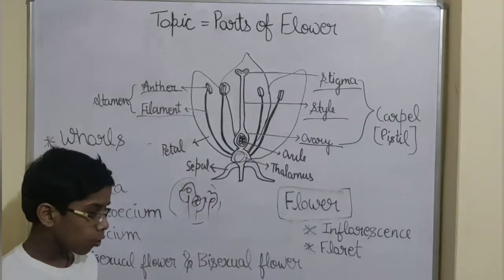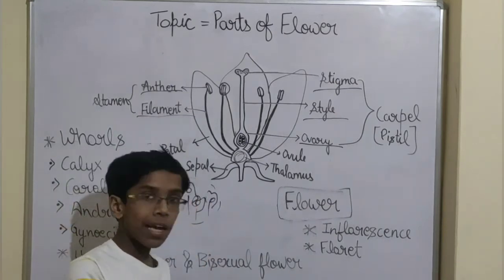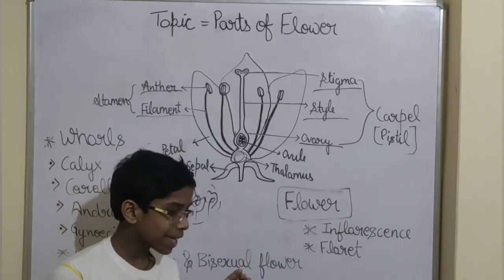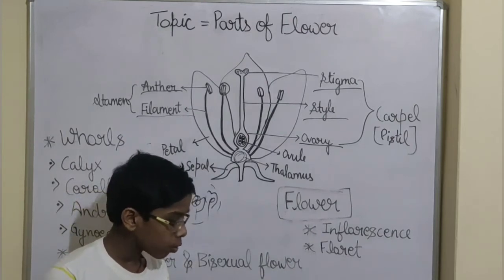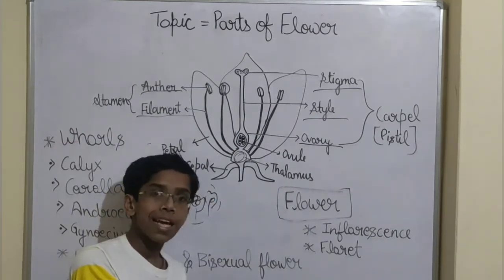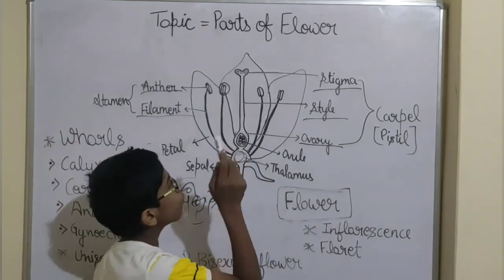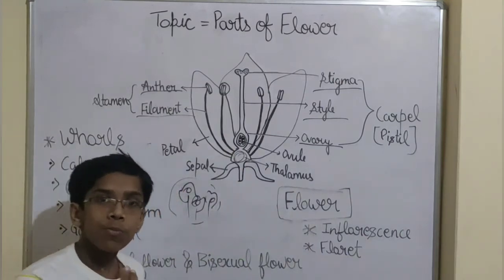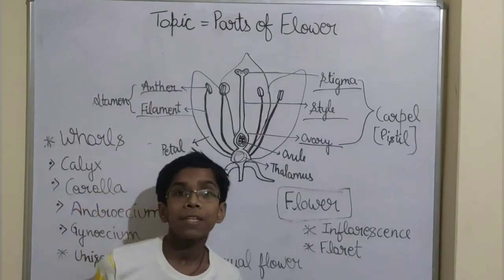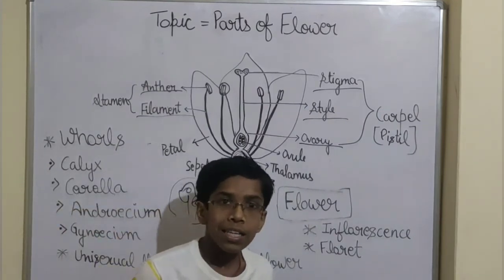If we have an ovary and we cut it vertically with a knife, we find small things inside which are known as ovules. Ovules are the small things inside the ovary. Ovule develops into the seed, and ovary develops into the fruit. Thank you, guys.